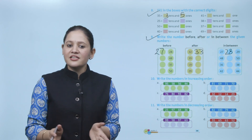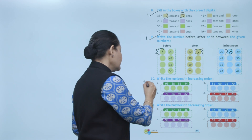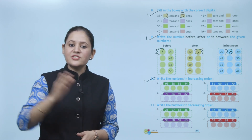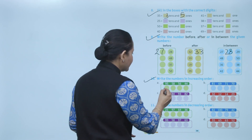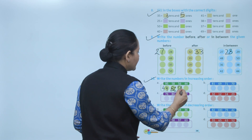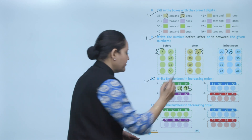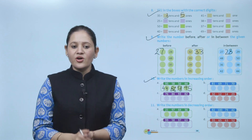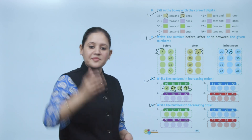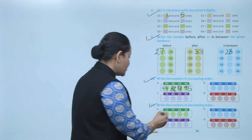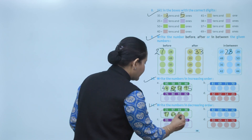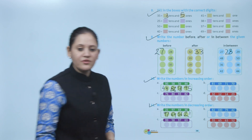Next, write the numbers in increasing order. Increasing means ascending order — from smallest to greatest. So the order is: 21, 36, 64, 97.